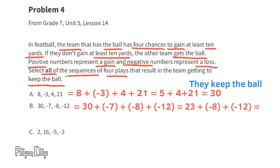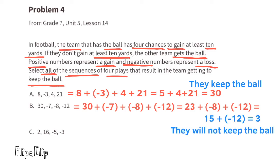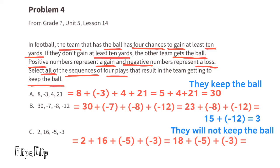Sequence b: gained 30, lost 7, lost 8, lost 12 — a total gain of only 3 yards. Since they didn't gain at least 10 yards, they will not keep the ball. Sequence c: gained 2, gained 16, lost 5, lost 3 — a total gain of 10 yards. Since they gained at least 10 yards, they get to keep the ball.